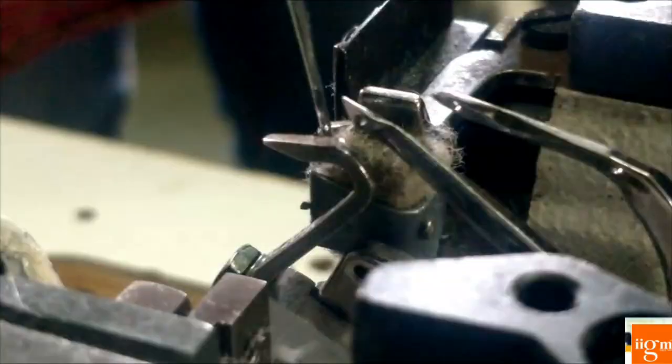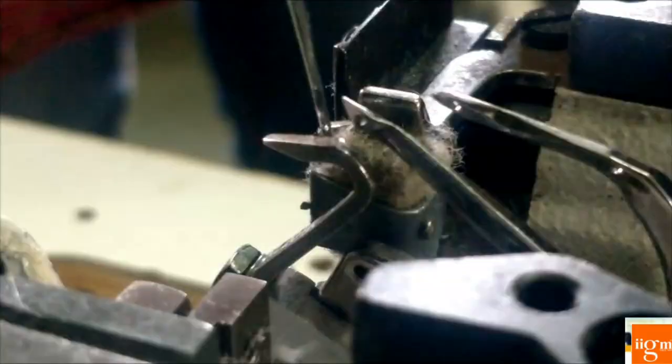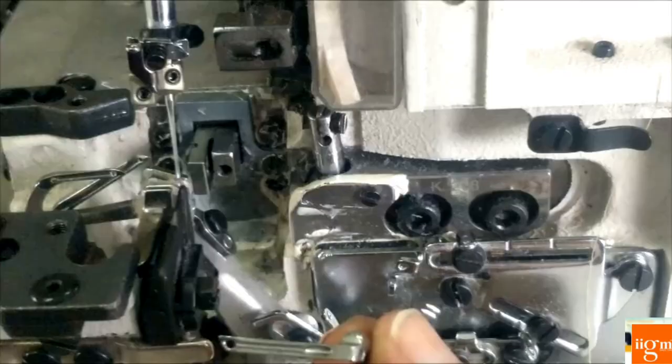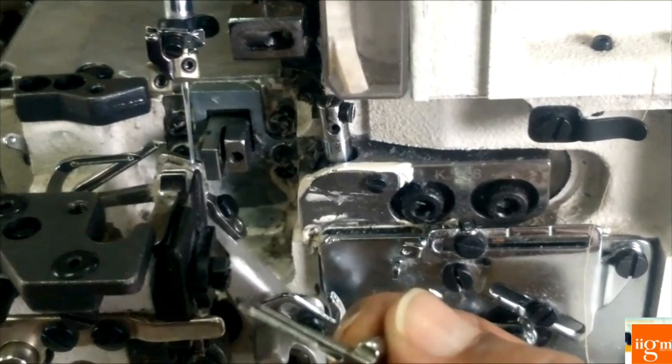This is the basic concept of the overlock formation and confirm that lower looper tip coming to the center of this scarf at the back side of the needle clearance of about 0.05 mm. Now, I am going to adjust the upper looper timing.